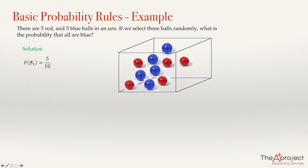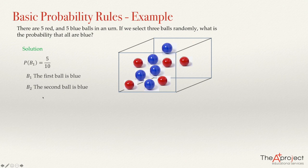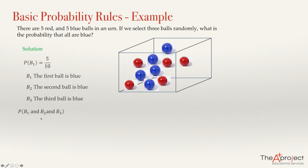The probability that the first ball we select is blue is five over ten. We call B2 the event that the second ball is blue, and B3 the event that the third ball is blue. We need to find the probability that the first ball is blue AND the second is blue AND the third is blue.